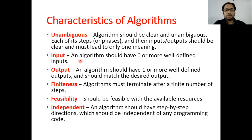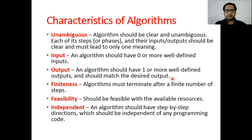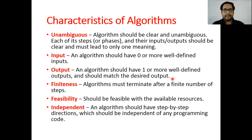Second characteristic is input: an algorithm should have zero or more well-defined inputs. Third is output: an algorithm should have one or more well-defined outputs that match the desired result. If your algorithm is not providing a meaningful output, no programmer will implement it. Input and output are both key components of an algorithm — with the right input and right process, you will have the right output.